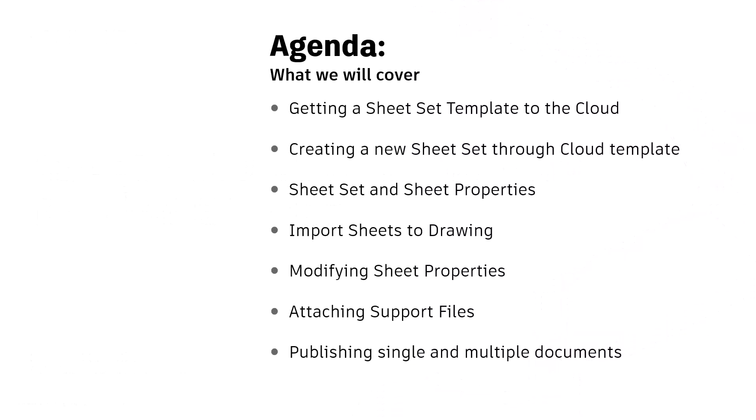On the screen here you see the agenda for this session. We are going to start out by taking a Sheet Set template that you may have locally saved or on a network, and get that up into the Autodesk Construction Cloud. Then we'll use that template to create a new sheet set on the cloud, import some sheets into the Sheet Set Manager, review, modify, and create some custom properties. We're also going to attach some support files like a CTB or STB used for publishing or plotting, and finally we will publish single and multiple documents with our plot styles assigned.